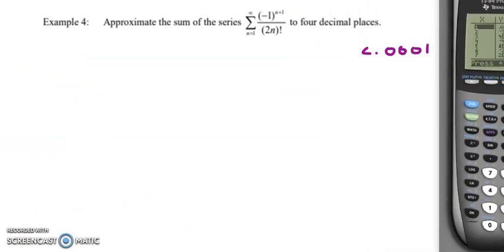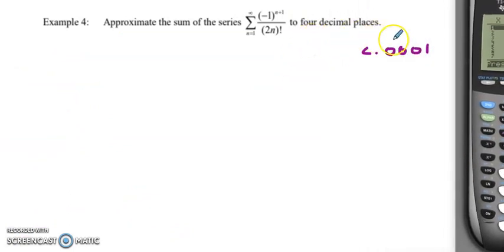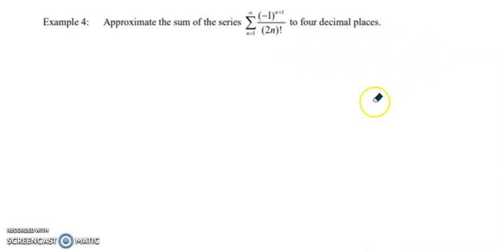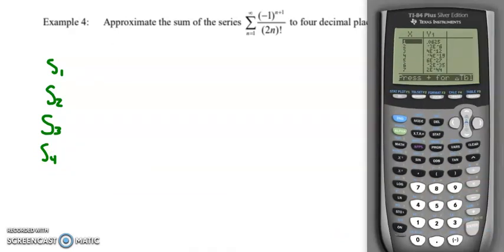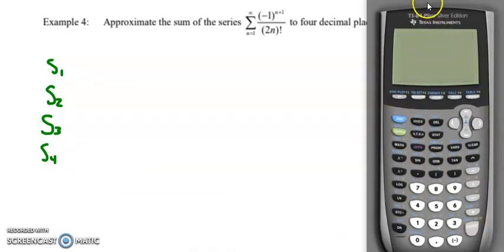All right, for this next problem, they're asking us to be accurate to four decimal places. And so I'm going to take this one from a different approach. What I'm actually going to do is take a sequence of partial sums. So I'm going to find the sum of the first term, the sum of the first two terms, the sum of the first three terms, and so on and so forth until I have four decimal places repeating. So I'm once again going to use my calculator, but this time I won't use the graph screen.